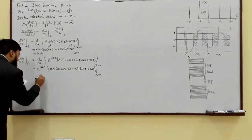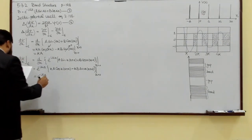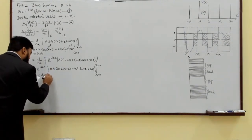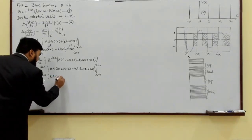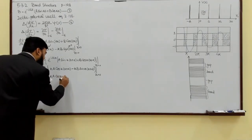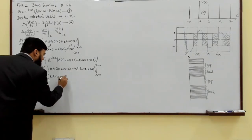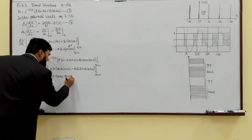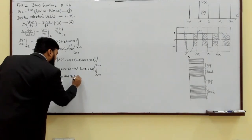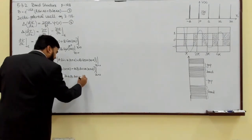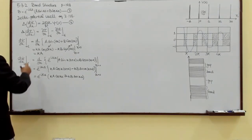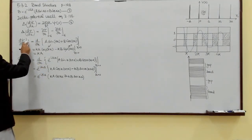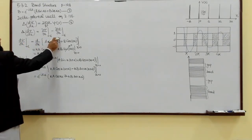So this will become e^(minus i·capital K·a), and this will be small k·a and cos of small k·a, plus minus, because minus is here, and k·b and sin of small k·a, at x equal to 0. Now I will utilize my equations, and I have calculated the plus and the minus.